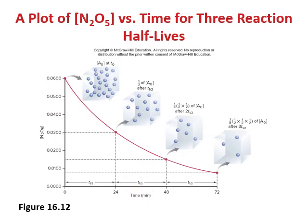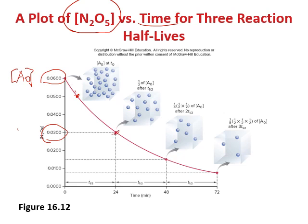Here is a plot of the concentration of N2O5 as a function of time. Initially, you start from 0.06. With time, the concentration decreases to 0.05, 0.04, and so on. Where is half of the initial concentration? Half of 0.06 is 0.03. The time to reach 0.03 is 24 minutes, so the half-life for this reaction is 24 minutes.